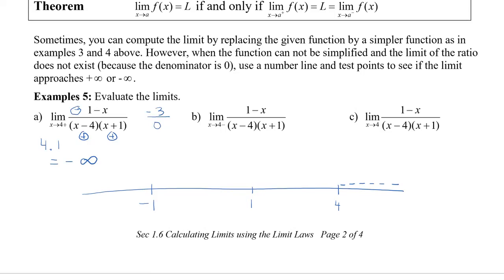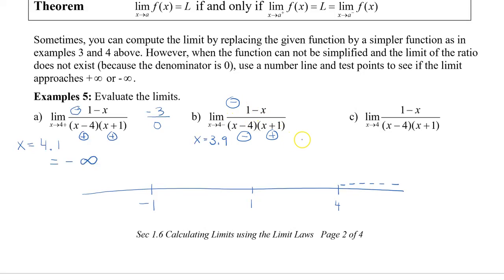For the left-hand limit as x approaches 4, it's important to pick a number close to 4, not something like 0, because the sign of the function can change between critical numbers. I'll choose x = 3.9. Then (1 minus 3.9) is negative, (3.9 minus 4) is negative, and (3.9 plus 1) is positive. With two negatives and one positive, the product is positive — so from the left side of 4, the function is positive.